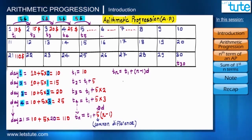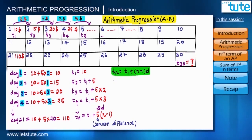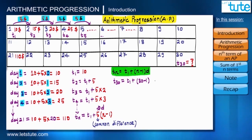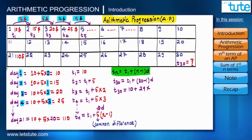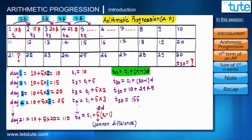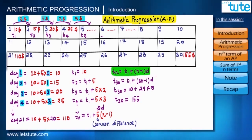Let's use this equation to find the payment on the 30th day, that is 30th November. Using the formula: t30 = t1 + (30−1)×d = 10 + 29×5 = 10 + 145 = 155. So on the 30th day I will get $155. We now have the general expression for any arithmetic progression, and we can find any term using it.